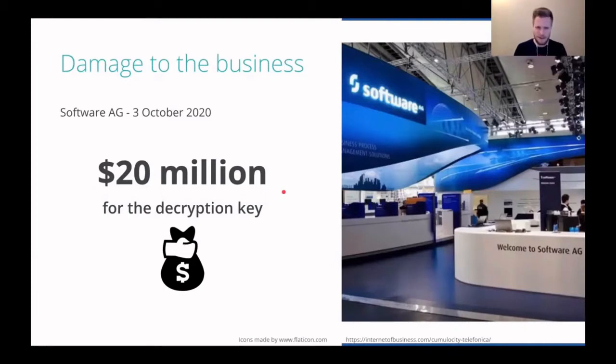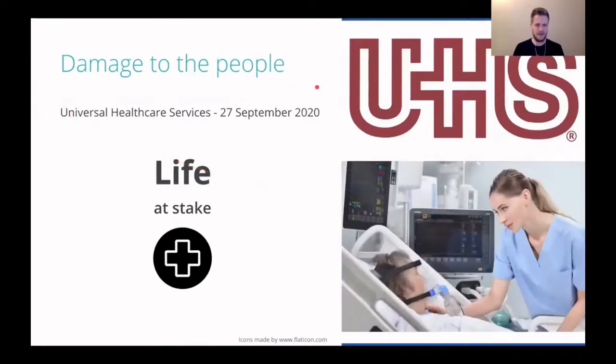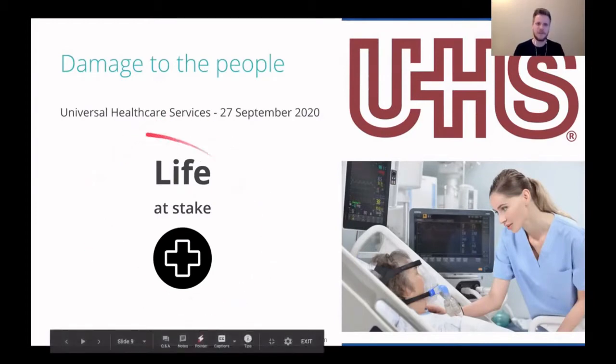But money isn't the only thing that can be lost because ransomware can also do damage to people if the target is some hospital or healthcare service. Here we have an example of universal healthcare services which were attacked on 27 September 2020. Their files were encrypted. So the medical documentation of their patients were encrypted. And when it's required to help the patient and you cannot access that, even life can be at stake. They were forced to move to all paper documentation by this attack.